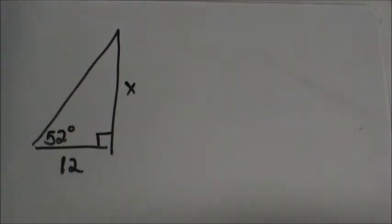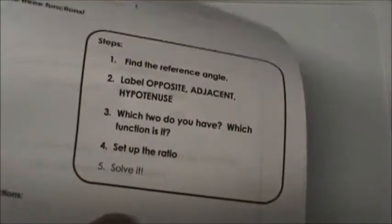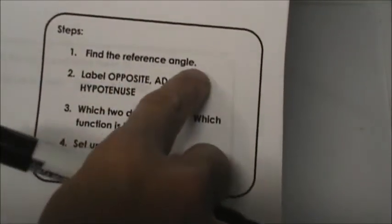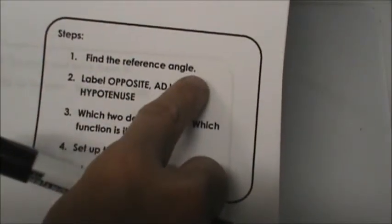I've got the steps over here on the right side for you. The first step is we're going to find the reference angle. Then we're going to label our opposite, adjacent, and hypotenuse based on that reference angle. Then we're going to decide which trig function we're going to use and set it up.